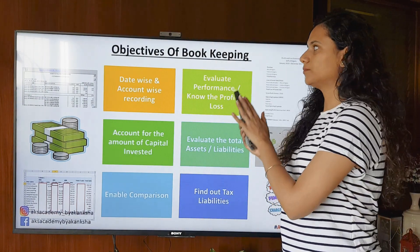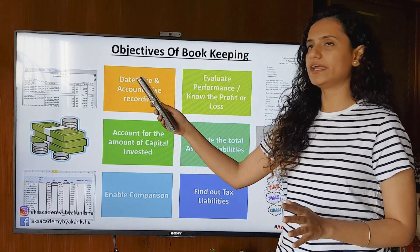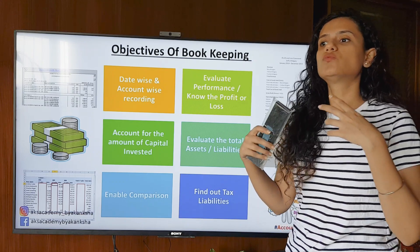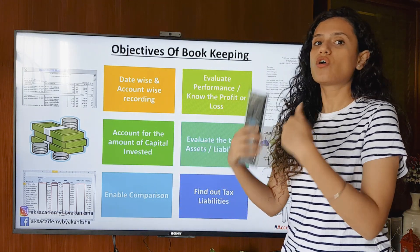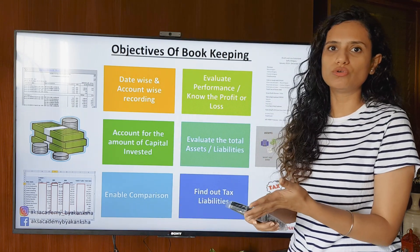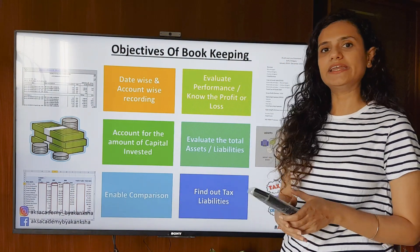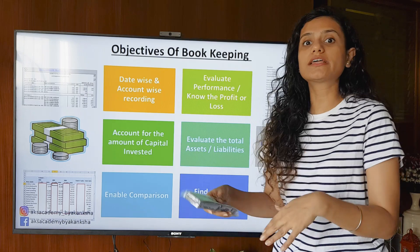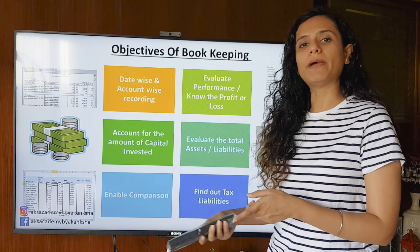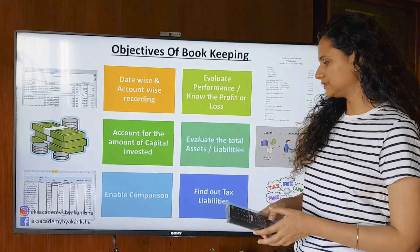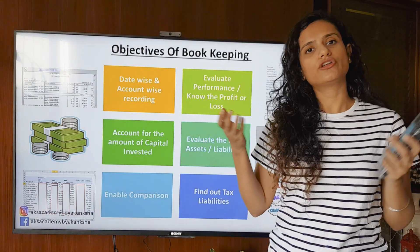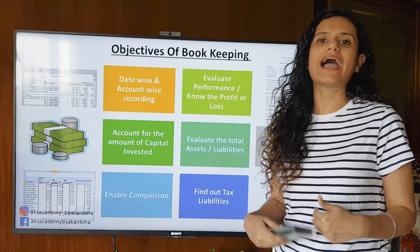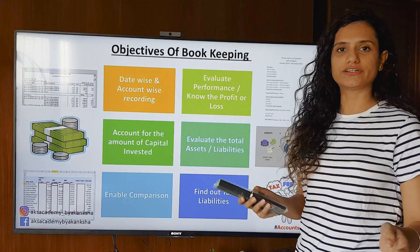Only if you have maintained the books correctly, with dates and accounts, will you know what you own — your assets — and what you owe — your liabilities, whether money or loans. The next objective is to enable comparison: with proper bookkeeping you can compare profits of previous years to the current year. Finally, bookkeeping helps you find out your tax liabilities — you need to know your income to know how much tax you have to pay.